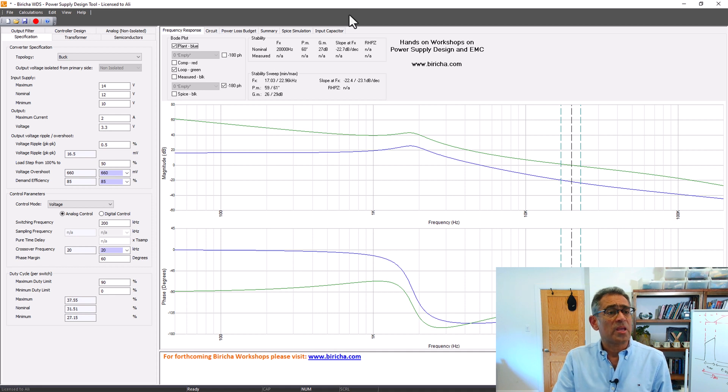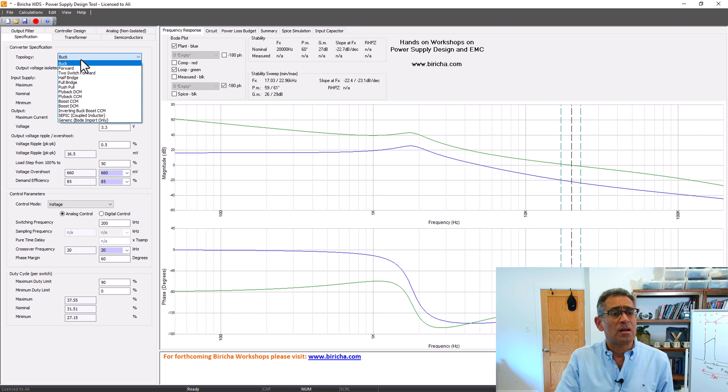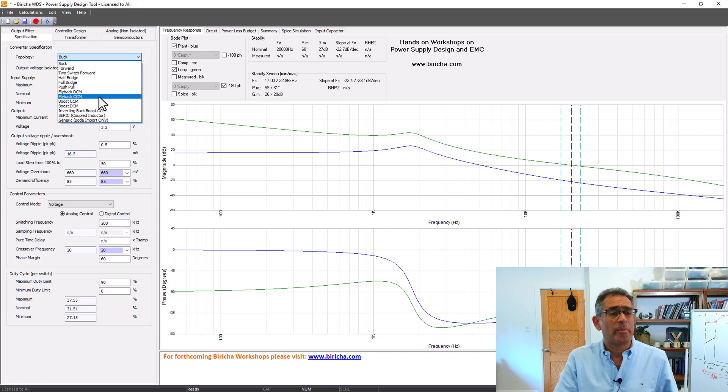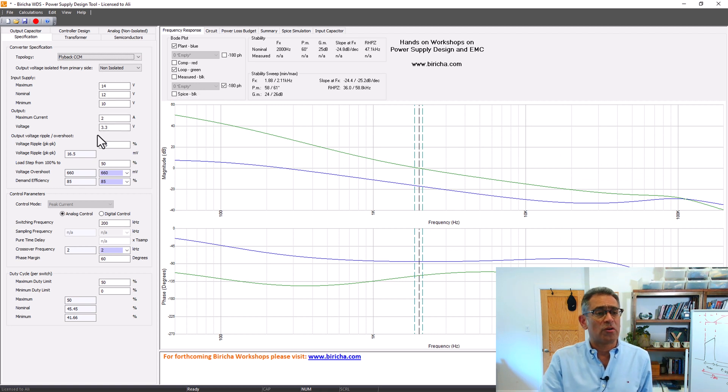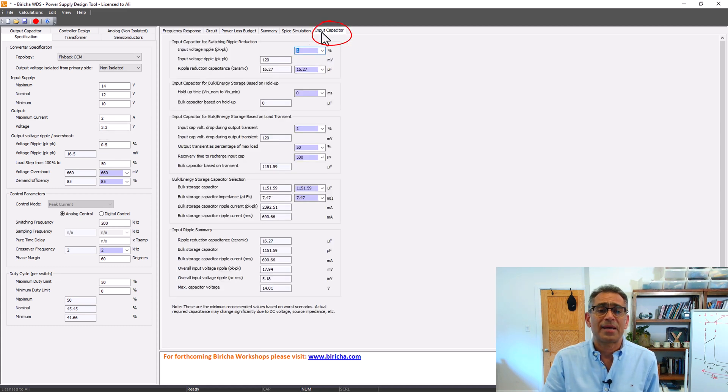So, here we are. I have got WDS running, and these are the topologies that are supported by WDS. Let us select flyback CCM. We tried buck on the board, and I will not go through the values of the input and output and so on. Let us leave those as default, because these are all covered in different videos. What are we interested in in this input capacitor tab? If I go to the input capacitor tab,